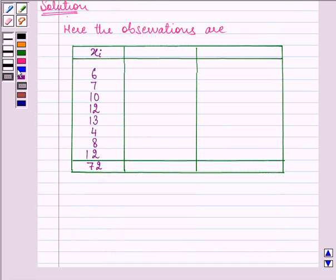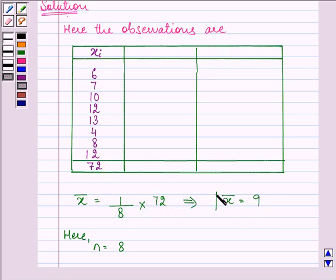Right, so let us first find out the mean. That is equal to 1 upon n. n here is equal to 8. So we have 1 upon n, that is 8, summation xi, that is 72. And on solving it, we have the mean equal to 9.